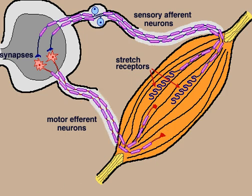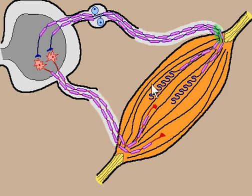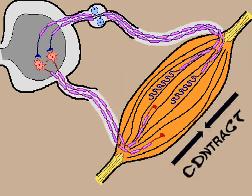This is the motor side — the 'do something about it' side. Here are the motor endings — the little end plates that tell the muscle to do something. We detected that stretch, and you can see that action potential coming back around, going through an interneuron here, into the spine through that synapse, and coming back out automatically into the motor end plates to tell the muscle to contract.